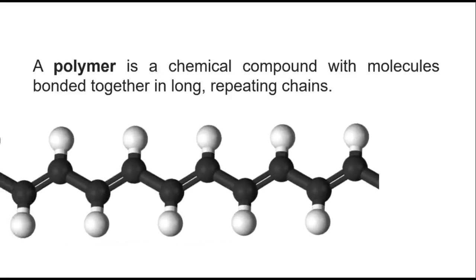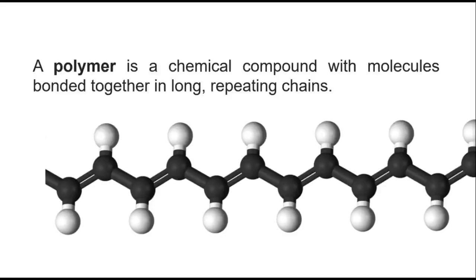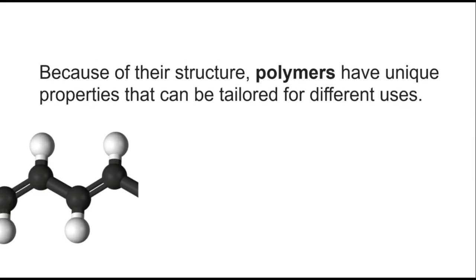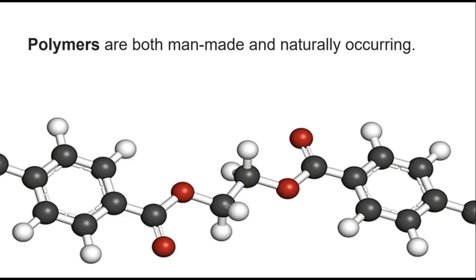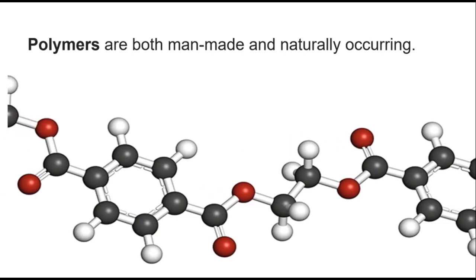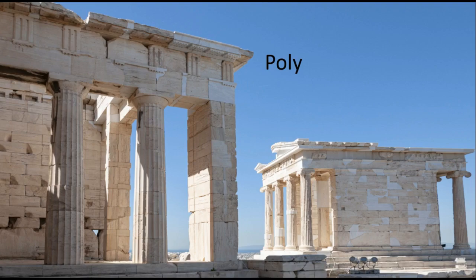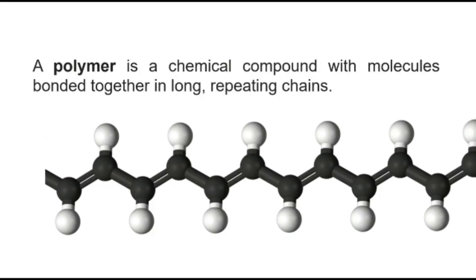Small units of chemicals are connected and become a large single unit, and that single unit is called a polymer. The word polymer comes from two Greek words: poly, which means many, and mer, which means a part or a unit. So a polymer is made of many repeating units of chemicals.